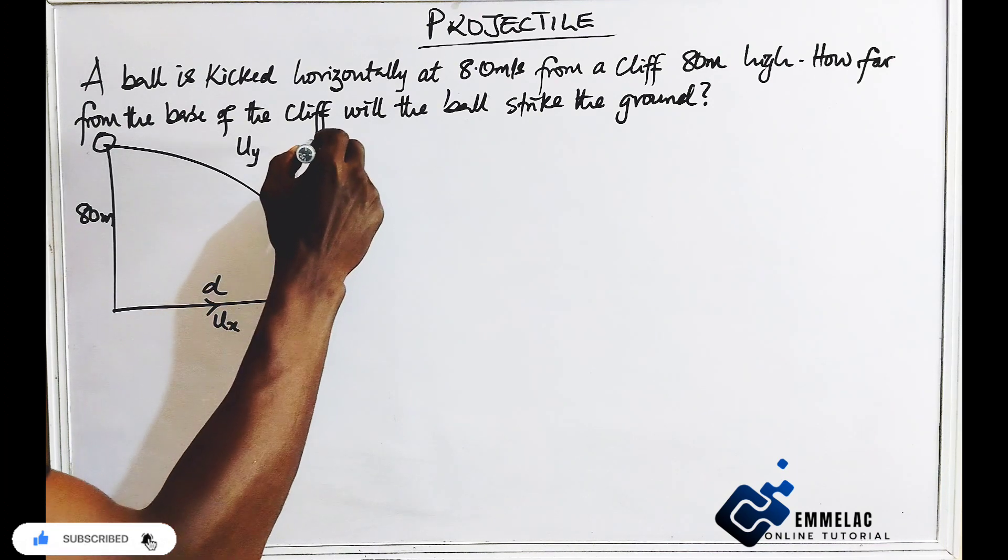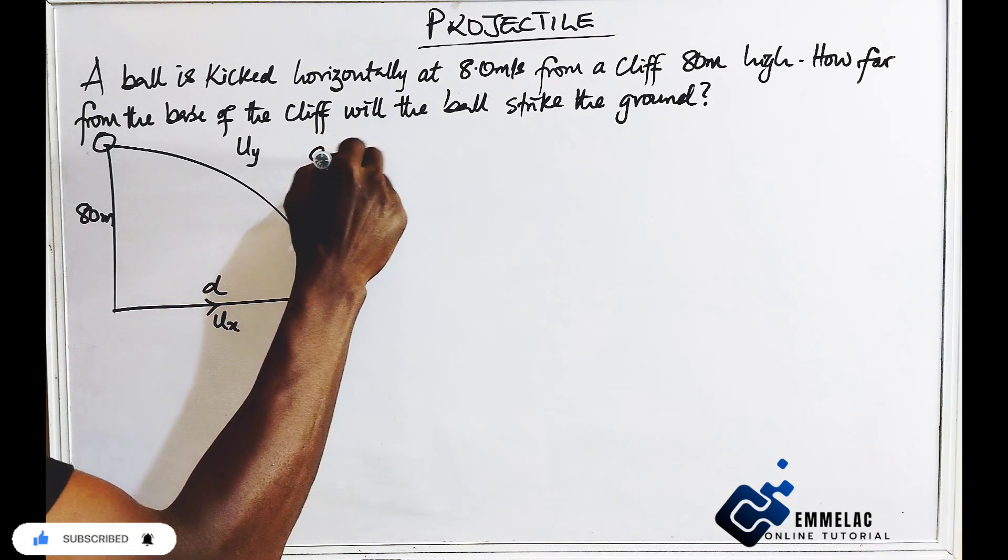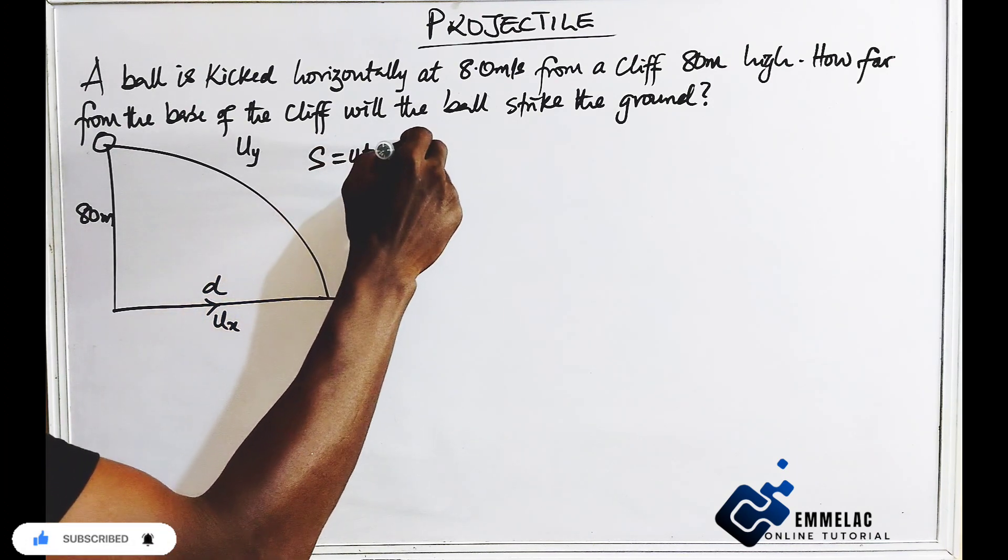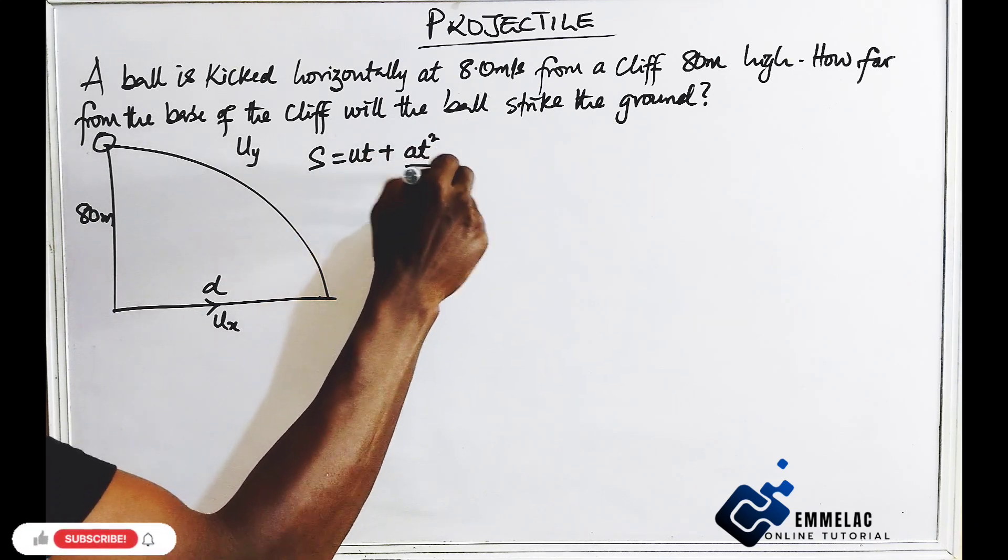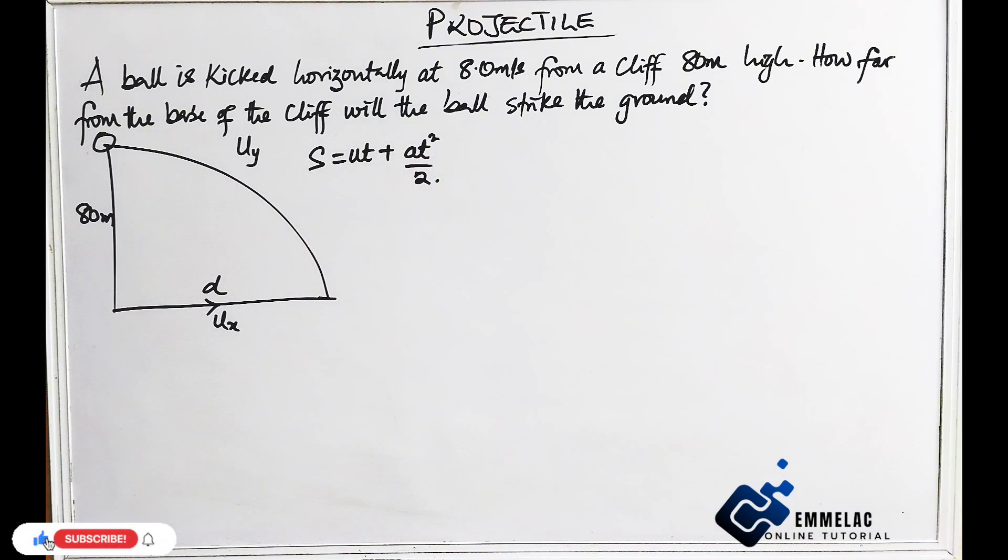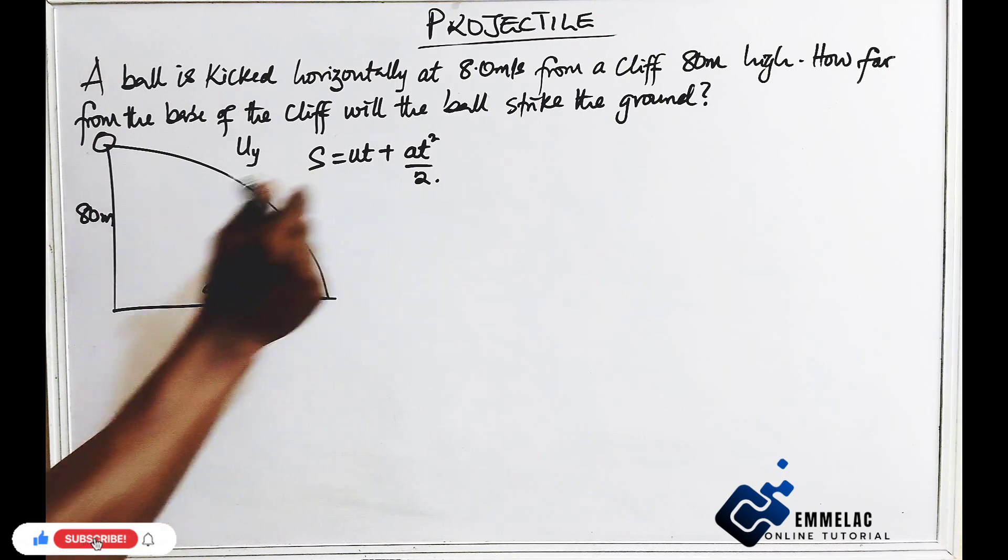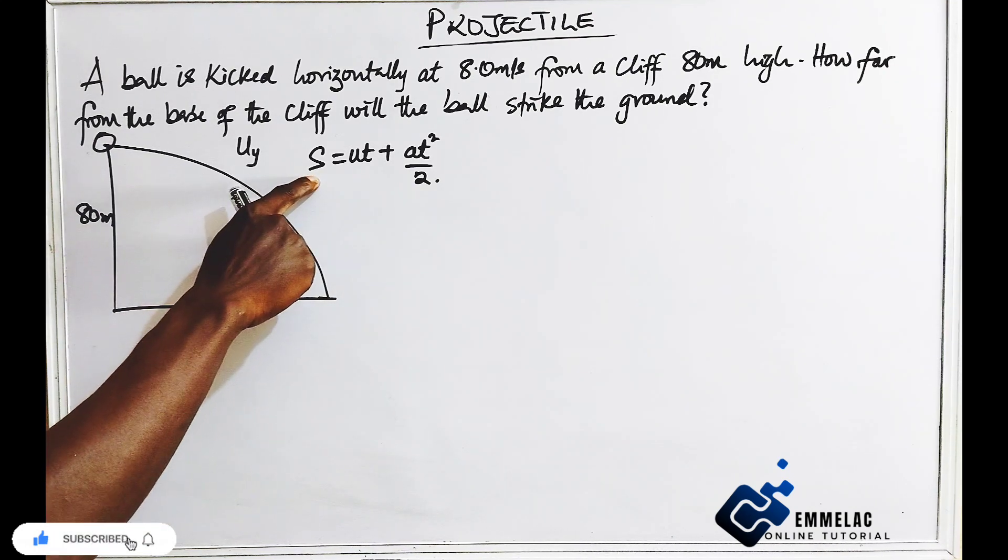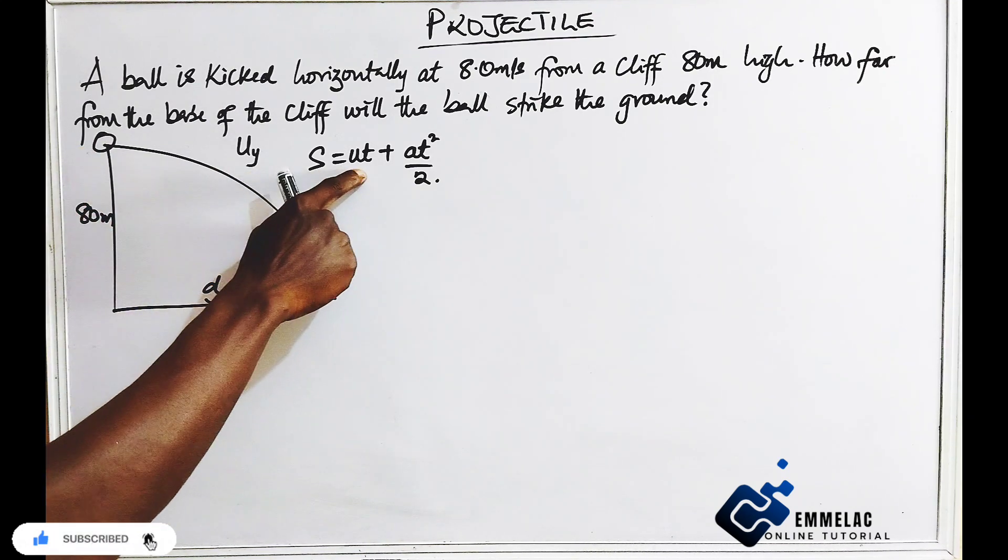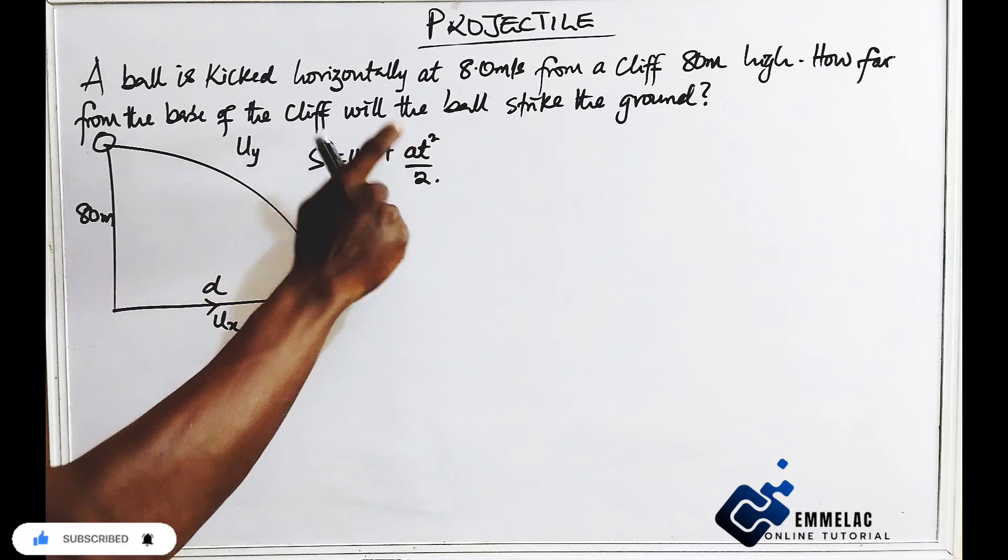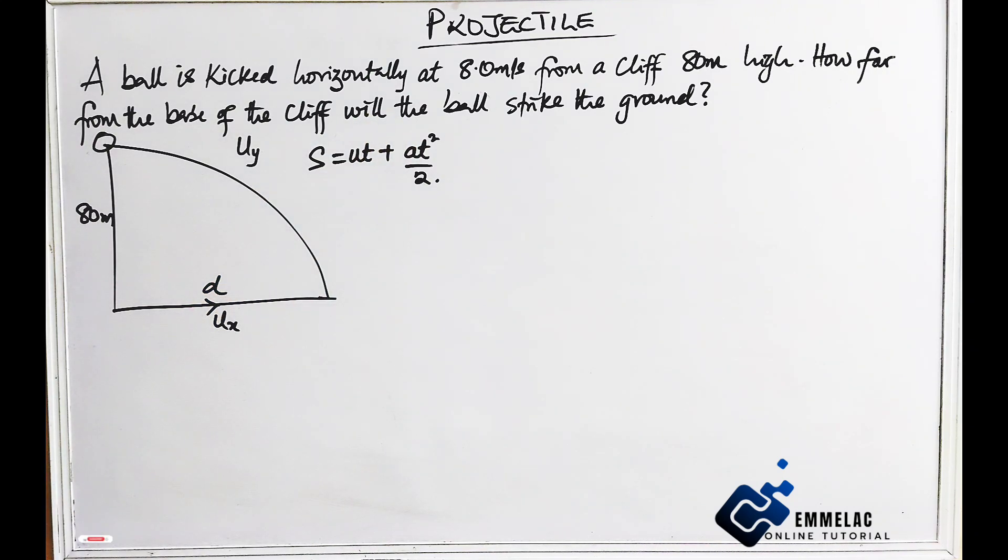Now let us recall using s equals to ut plus at squared over 2. Now from this equation down, where this s here indicates the height, this is the initial velocity, the time and acceleration due to gravity.